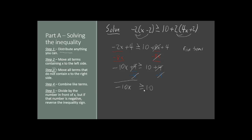Leaving us with negative 10x is greater than or equal to 10. Now we divide by the number that's in front of x — divide both sides by negative 10. This is a little different from what you're used to, because the number that we're dividing by is negative. And in an inequality problem, that means you have to change the inequality sign. So it will no longer be greater than or equal to — since we divided by a negative, it changes to less than or equal to. Negative 10 divided by negative 10 cancels out, leaving us with just x on the left side. On the right side, we have 10 divided by negative 10, which gives us negative 1.